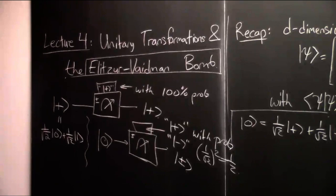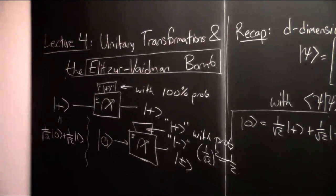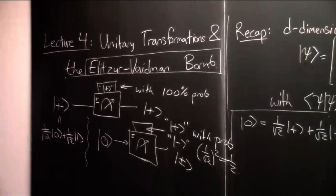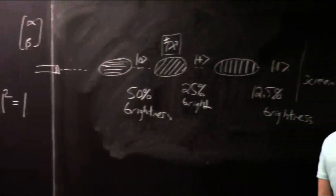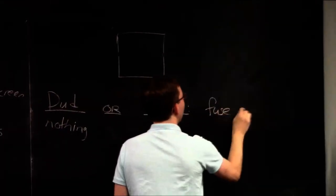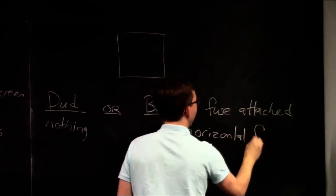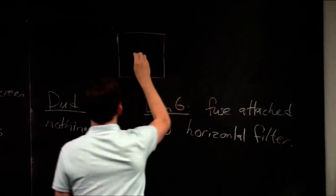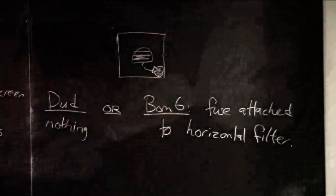Some mysterious person hands you a box that is opaque, but it has two slits — one for incoming photons and one for outgoing photons. You know that the contents, which you can't see, are in one of two states. In state 'dud,' there's nothing in it — an empty box — so if you put a photon in, exactly that photon comes out. Or there's a bomb inside with a fuse attached to a horizontal polarizing filter.